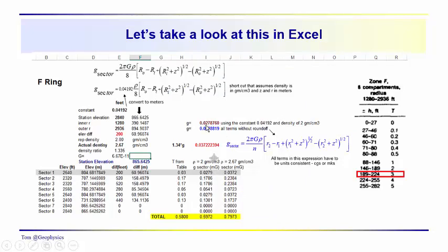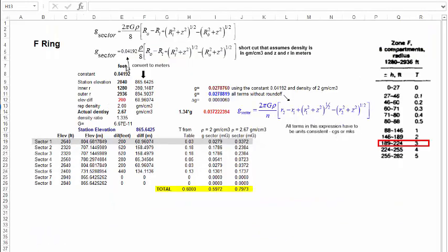So we're going to take a look at an Excel file here, and just kind of go over the computations and point out some issues. First of all, you have to be units consistent, so we're going to have to take our station elevation and convert that to meters. Multiply the inner and outer radius times 3.2808 in order to get a units consistent computation using this equation.